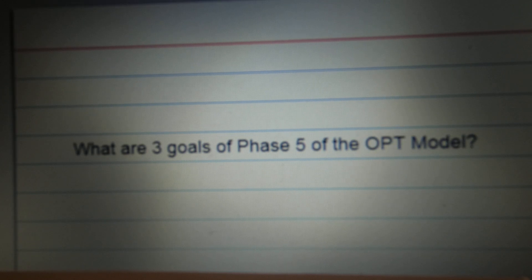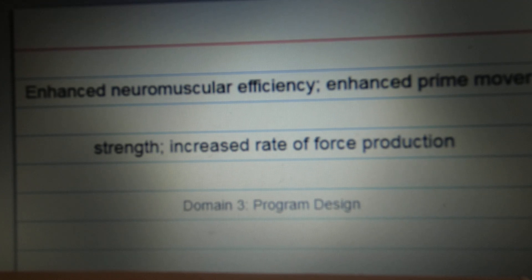What are three goals of phase five of the OPT model? Enhanced neuromuscular efficiency. Enhanced prime mover strength. Increased rate of force production.